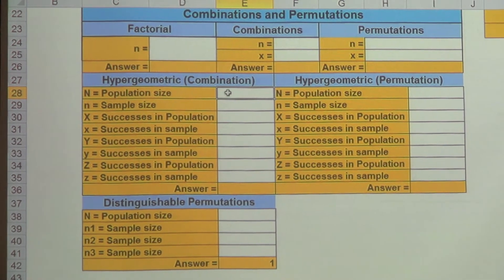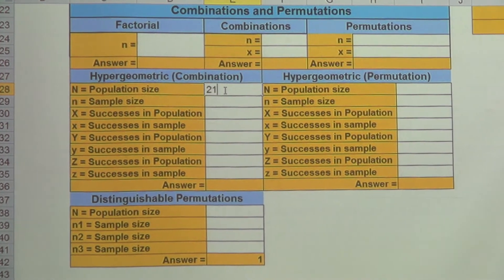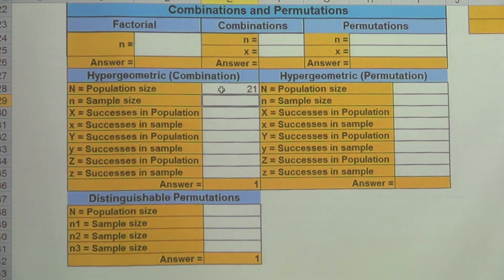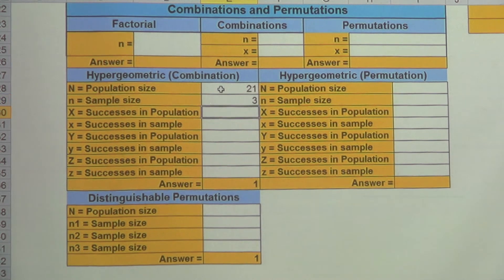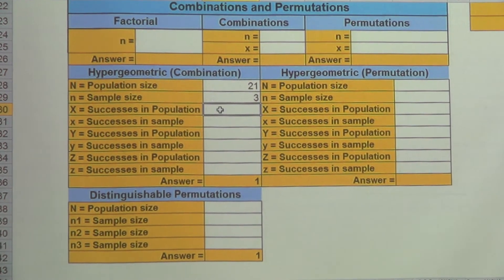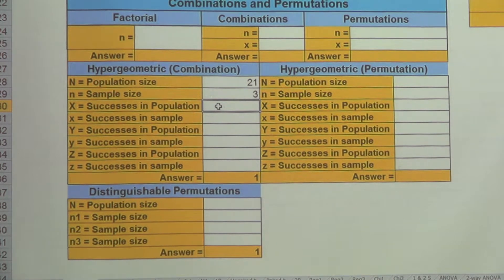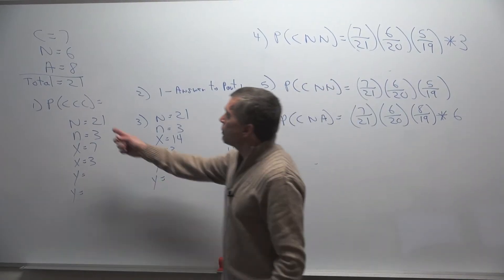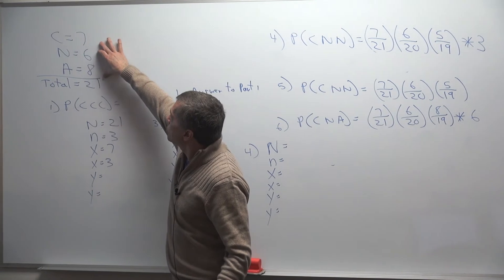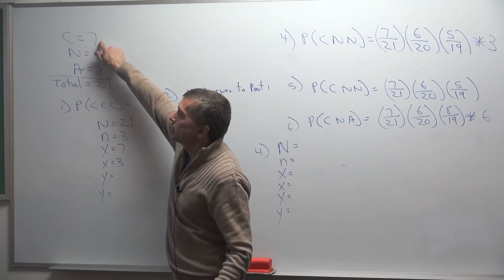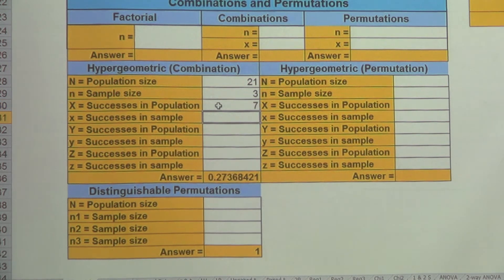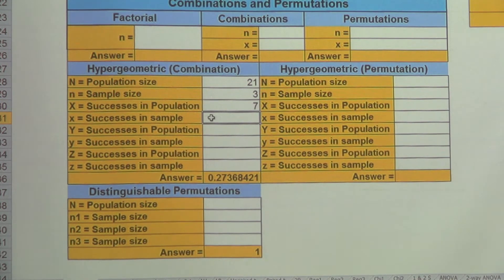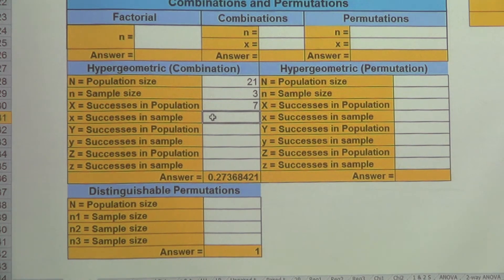This is my population size, and we have 21 people total. The next bit is how many people are we sampling out? We're sampling out three people, so your little n is three. The next bit is how many successes are in the population of the group we're looking for? I'm looking for people from California. How many people in my population of 21 are from California? Seven. And then the little x is how many people are from California in my sample? I'm looking for three people to be from California. So this is a three.